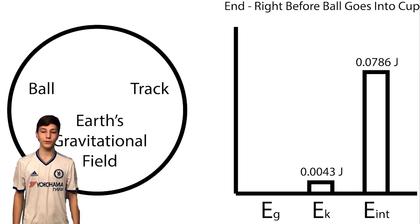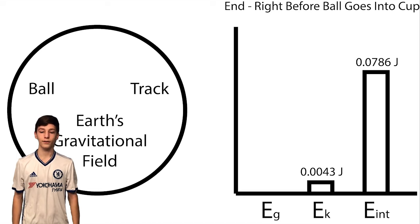At the end, right before it enters the cup, the gravitational potential energy is 0 joules. The kinetic energy is 0.0043 joules and the internal energy is 0.0786 joules. Because it has lost most of its energy to friction.